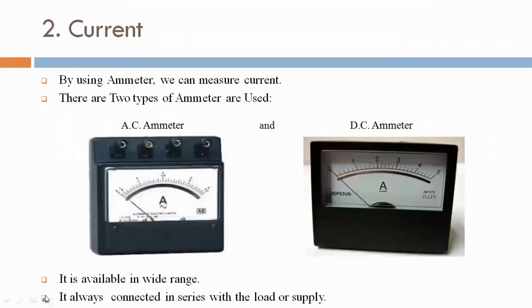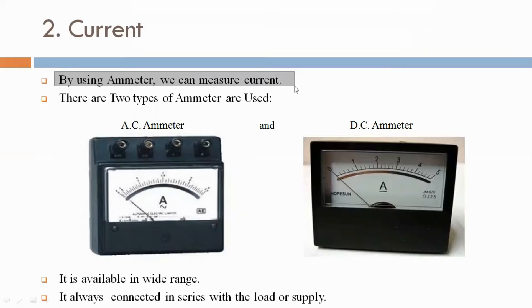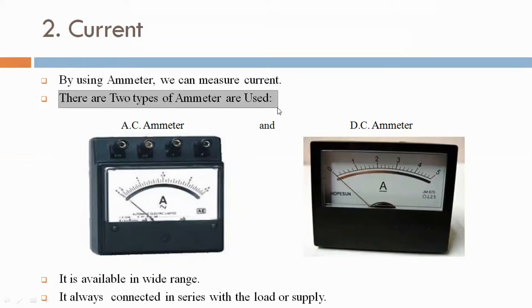Second, current. By using an ammeter we can measure electric current. There are two types of ammeter used: AC ammeter and DC ammeter.